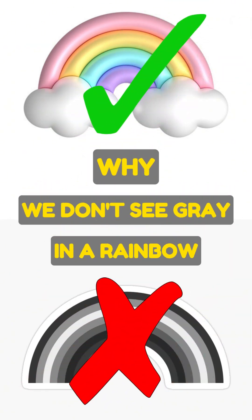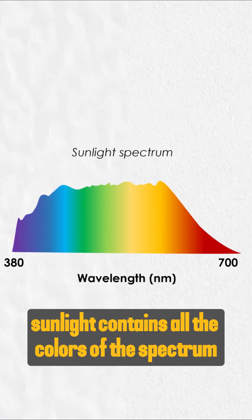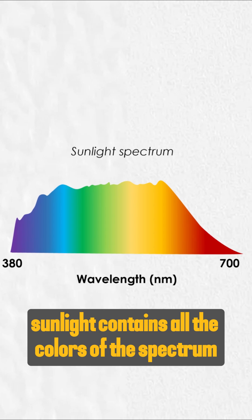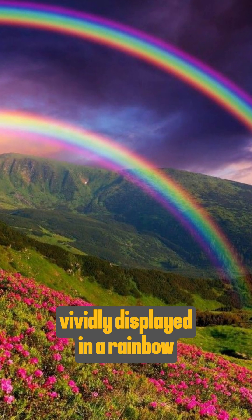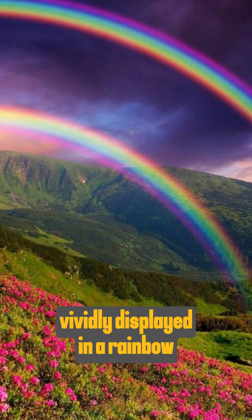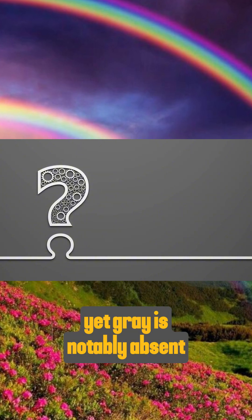Why don't we see gray in a rainbow? As we all know, sunlight contains all the colors of the spectrum, vividly displayed in a rainbow, yet gray is notably absent.